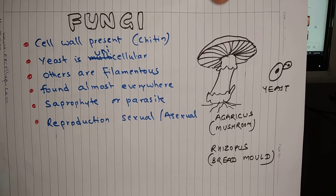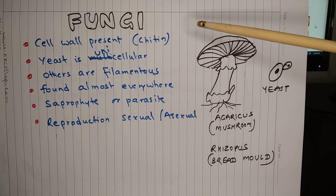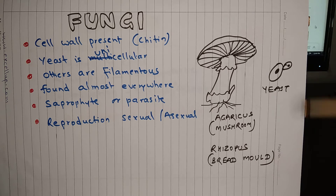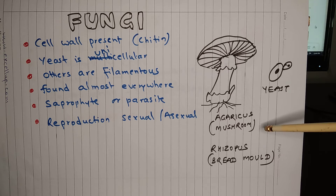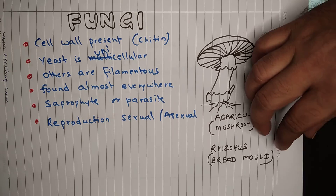Kingdom Fungi: cell wall is present in fungi and it is made of chitin. Yeast is a unicellular fungus, while other fungi are multicellular and filamentous. Fungi are found almost everywhere; they are heterotrophs and can be saprophytes or parasites. Reproduction is sexual or asexual. Examples include yeast (unicellular), Agaricus commonly known as mushroom (multicellular), and Rhizopus or bread mold, which grows on stale bread or fruit.